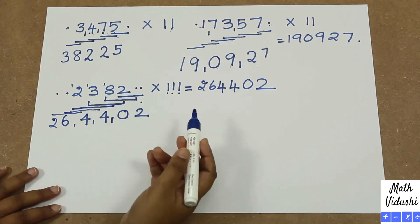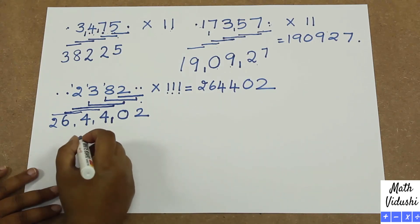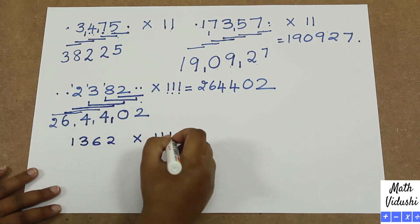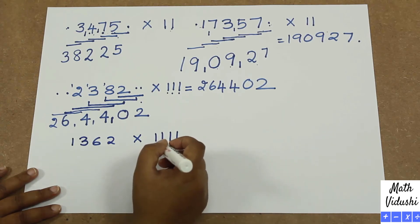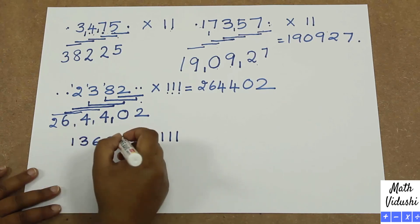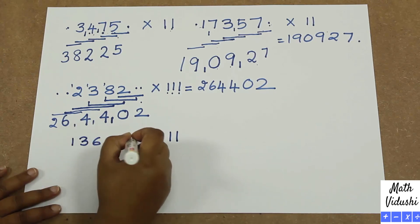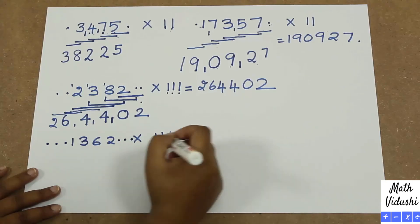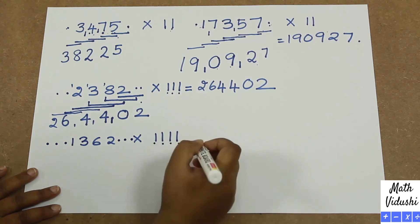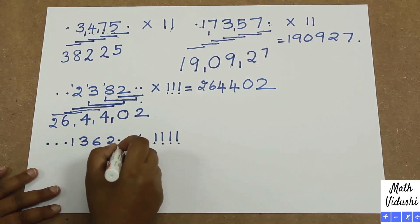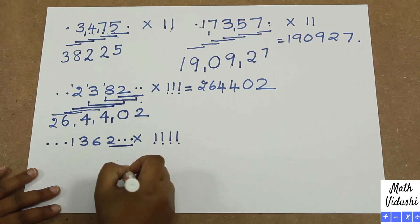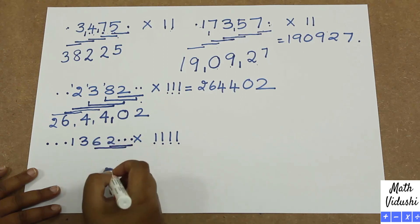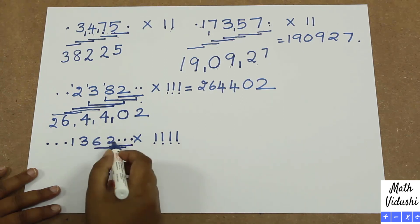Now let's try multiplying by 1111. Take 1362 multiplied by 1111. Can you tell how many dots we have to put? We have to put 3 dots on each side because there are four 1s. We have to take 4 numbers at a time. Starting from the right, you get 2. Then taking 4 numbers: 0 plus 0 plus 2 plus 6 gives you 8.